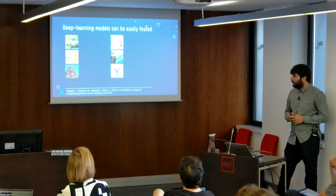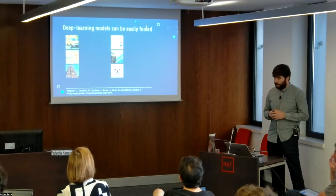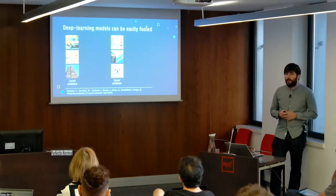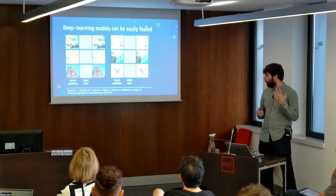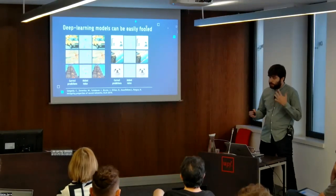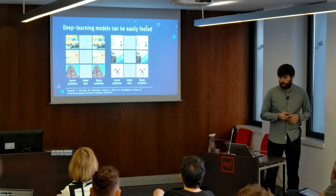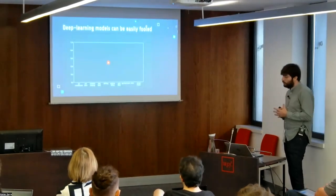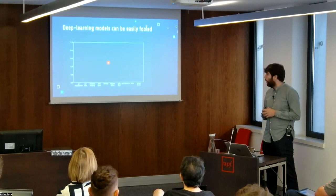However, studies on adversarial attacks show that these deep learning models can be easily fooled. In this example, we have data instances that are correctly predicted by the network, and then applying a minor transformation — which is actually unnoticeable — it is possible to fool the network into making wrong predictions. We could also find intriguing results by testing the model on edge cases.